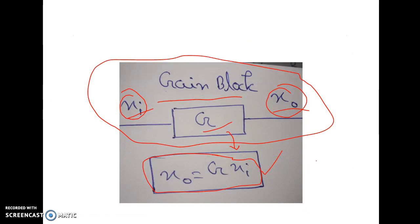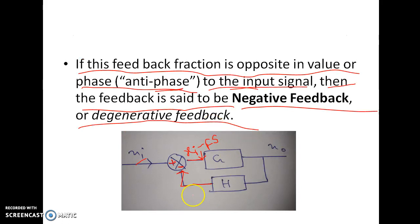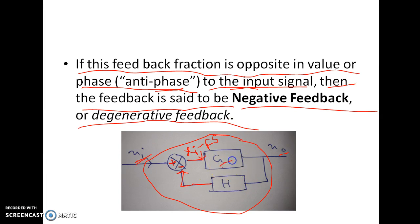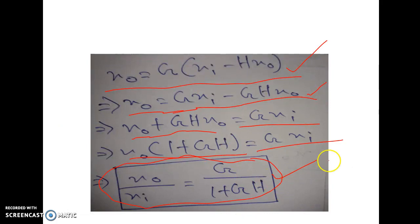So for negative feedback, the equivalent gain X_out over X_input is G divided by (1 plus GH). Here H is the transfer function or transfer factor of the feedback block. Without feedback, X_out over X_input is simply G. But with negative feedback, the equivalent gain is G over (1 plus GH). This is a very important formula — keep it in mind. I will show you more concepts and numericals related to this formula in my next video. This is all for this video. Thank you for watching.